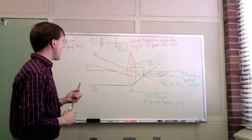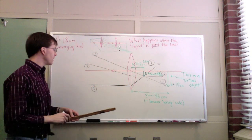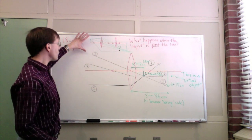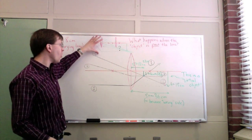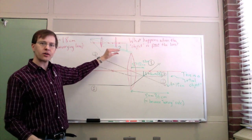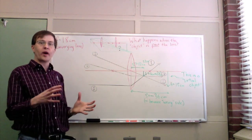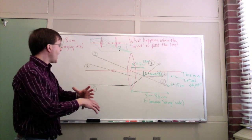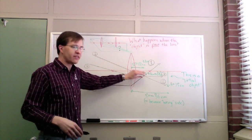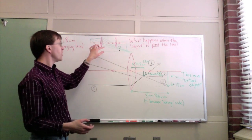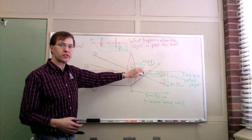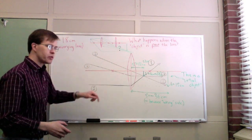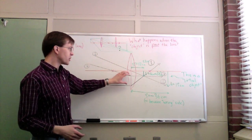Conceptually, think about what's going on: I had rays that were already converging, already focusing down to a point, and then I put a converging lens in the way. Converging lenses tend to bring rays more together, so if they're already coming together, this lens makes them converge even faster. Indeed, that's what happened — they bent inward and came together earlier than they would have otherwise. A second converging lens with a virtual object just makes you converge faster and find your image point sooner.